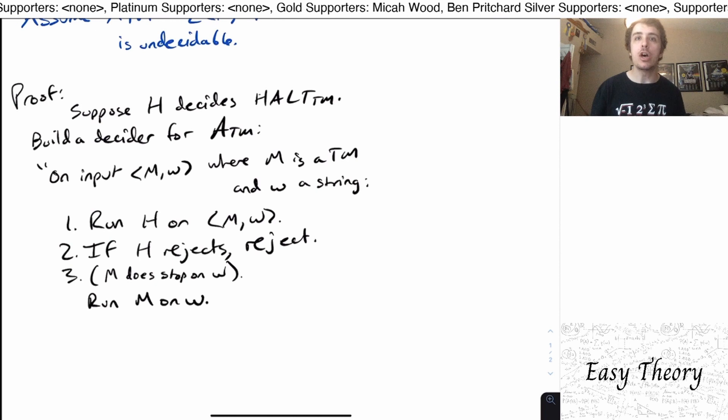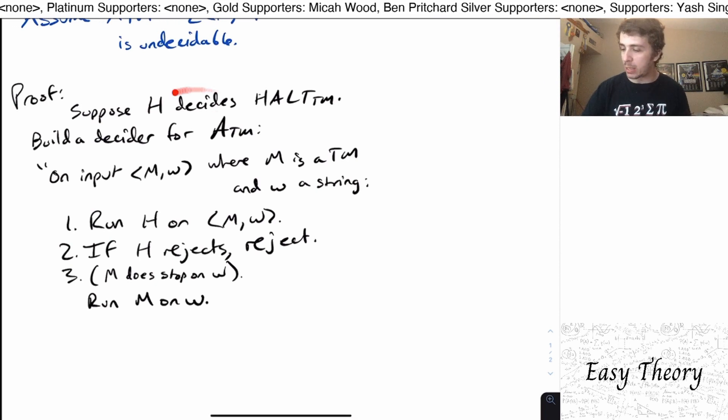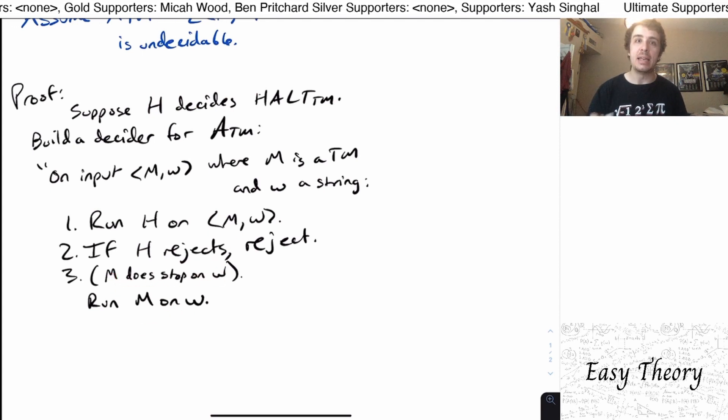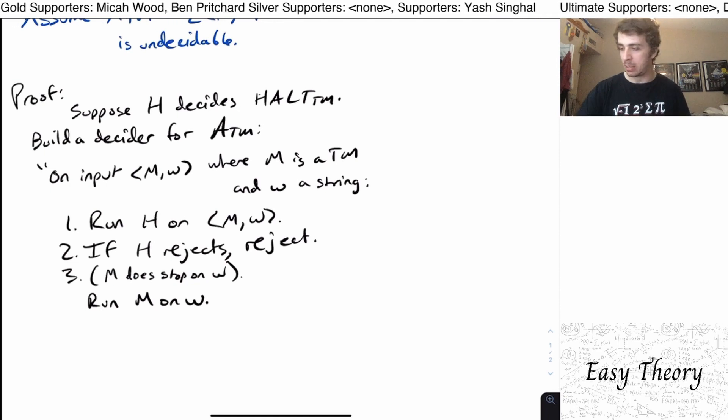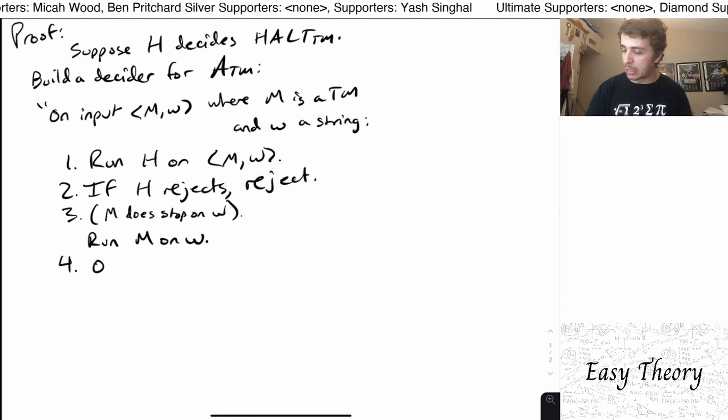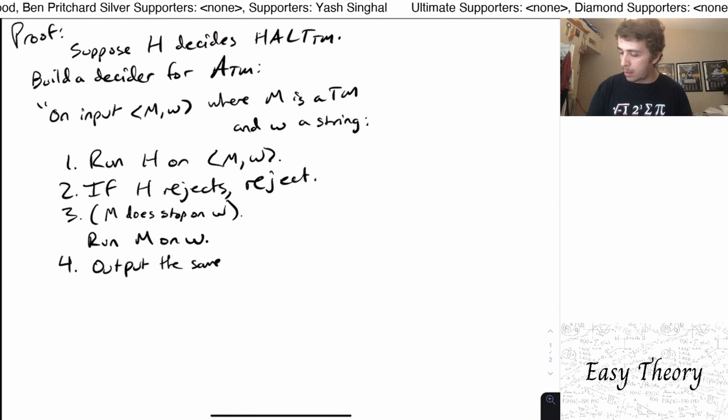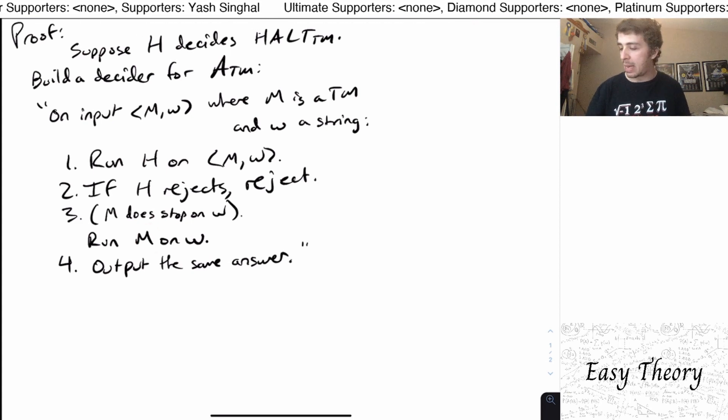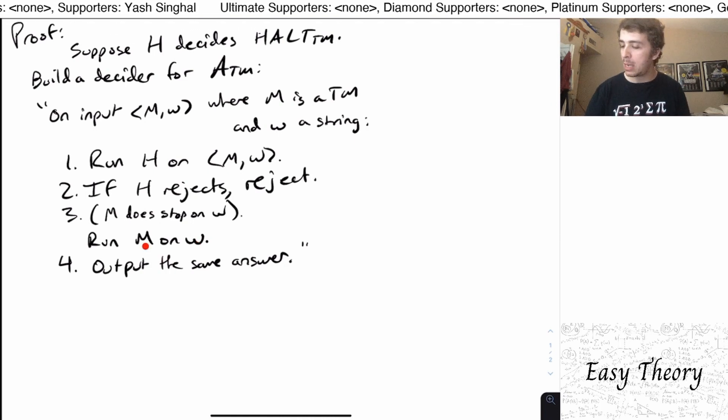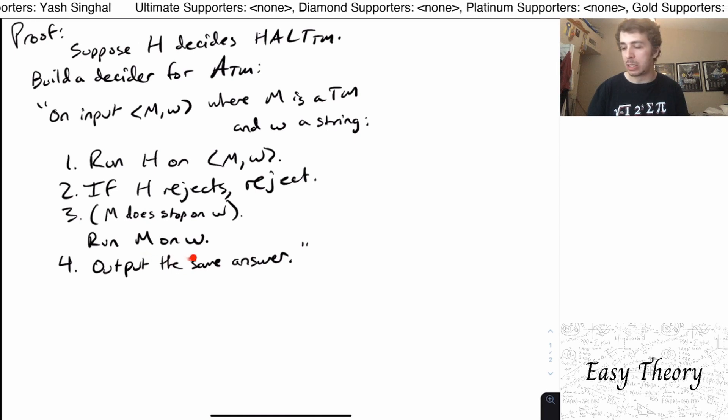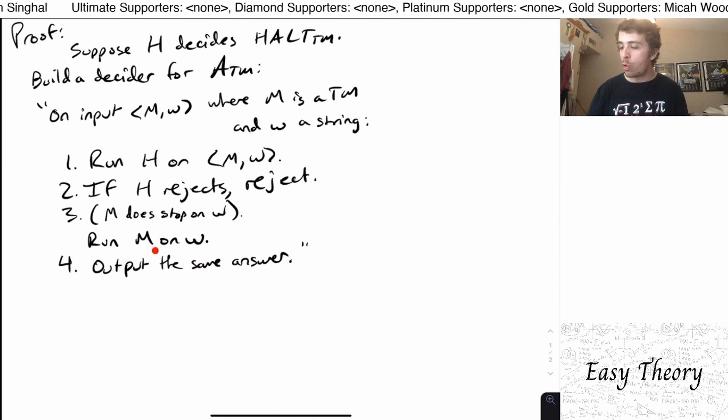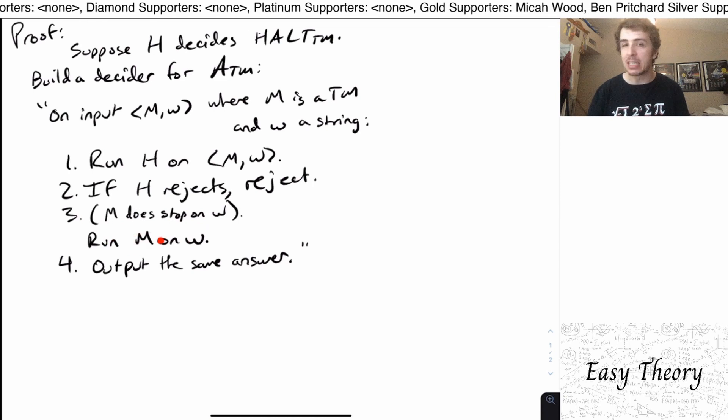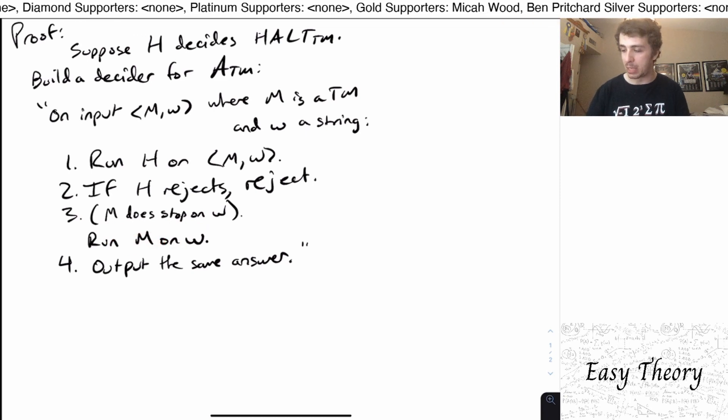So just run the machine because we know that it will stop here, based on the assumption that H will reject before. So if we make it to this step, that means H said that the machine will stop on W. So then now all that we need to do is to output the same answer. So whatever M says on W, we're going to do the exact same thing. If M accepts W, then we're going to say accept. If M just plain outright rejects W, then we'll just reject in the exact same way. And we know if we make it to step three, one of those two will happen because we saw that H told us if we get to this step, the machine will stop on input W.